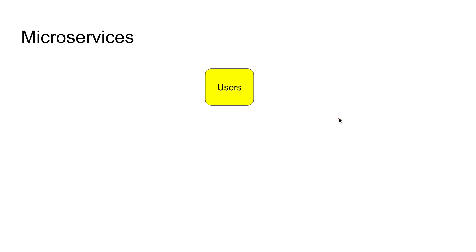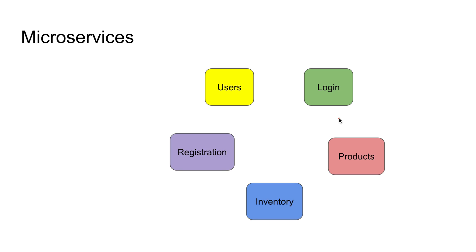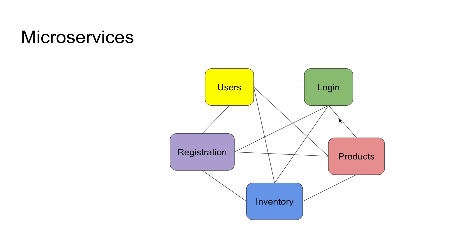In microservices, every module is created, developed, hosted, and maintained as a separate service. For example, we can have a user service, login service, registration, products, inventory, and so on. All these services talk to and communicate with each other, and we have rules that guide this communication.